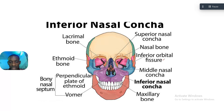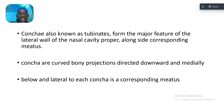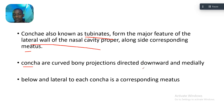You see the inferior nasal conchae — beautiful. We have to talk about all of these. The conchae, also known as turbinates, form the major feature of the lateral wall of the nasal cavity proper, alongside the corresponding meatus. The conchae are called bony projections directed downward and medially.